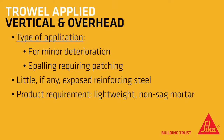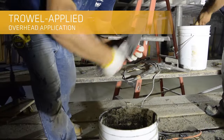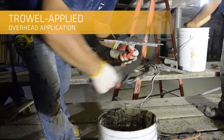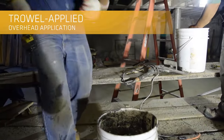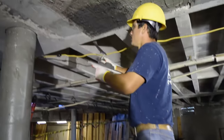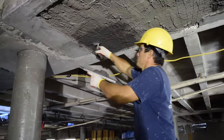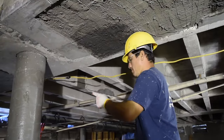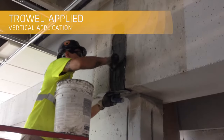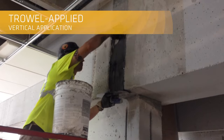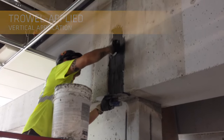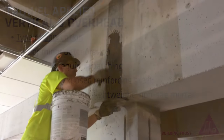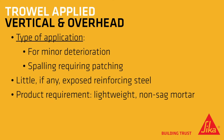Trowel applied vertical and overhead applications generally address spalling and mild to moderate deterioration on vertical and overhead surfaces. If there is little or no exposed reinforcement steel, non-sag repair mortars are required.